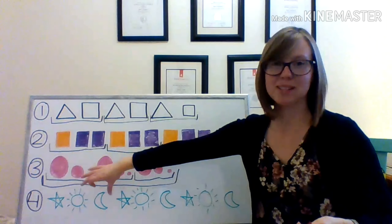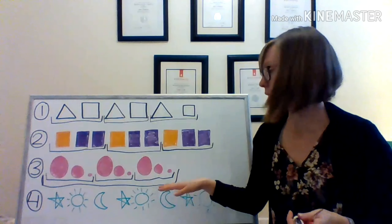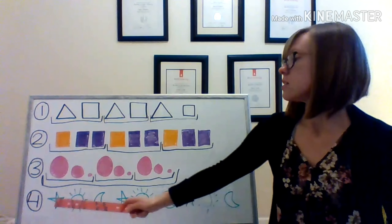We just want to focus on what's at the beginning that's being repeated. Our last pattern uses pictures as our attribute. We have: star, sun, moon, star, sun, moon, star, sun, moon. I'm going to find the core. Our core of this pattern — let's see if we have it — is star, sun, moon. If I have it right, it's going to repeat the same right after: star, sun, moon, star, sun, moon. There it is!